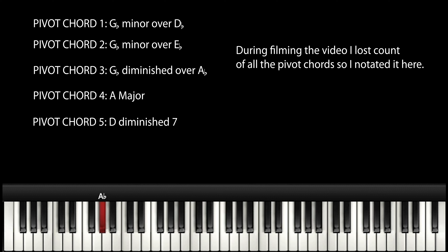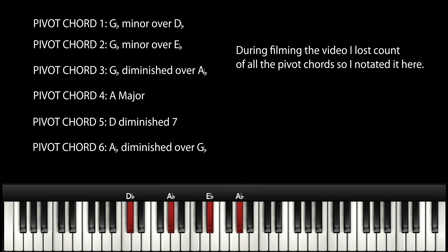And then we do this — we're here. And now to pivot out of that — this here is your Lydian, G-flat Lydian. Yeah, it is G-flat Lydian: 1, 2, 3, 4. So now we're here — this is our second pivot chord.